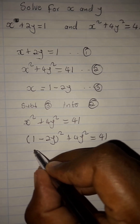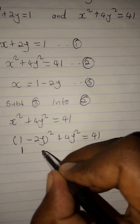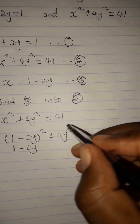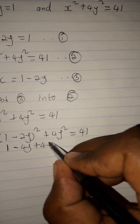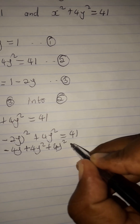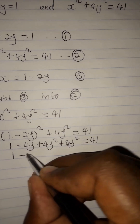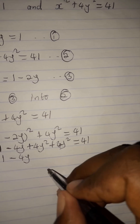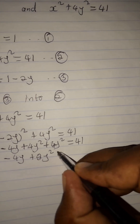Now expand (1 minus 2y) squared. Square the first: 1 squared is 1. Then 2 times 1 times negative 2y gives negative 4y. Then square the last: negative 2y squared — when you square a negative number it becomes positive — so that's positive 4y squared. So we have 1 minus 4y plus 4y squared, plus 4y squared, equated to 41. Combining like terms: 4y squared plus 4y squared gives 8y squared.